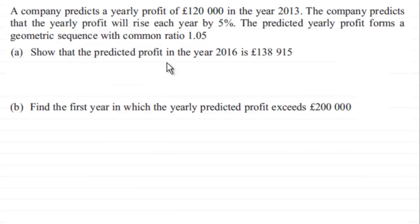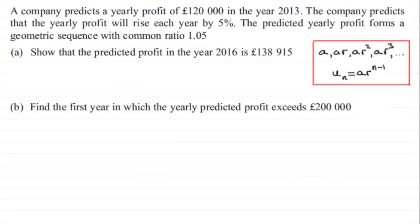In part A we need to show that the predicted profit in the year 2016 is £138,915. To do this you need to be familiar with the geometric progression — you can check it out at ExamSolutions.net. Essentially, if the first term is a with common ratio r, the terms are a, ar, ar², ar³, and so on, giving the nth term as U_n = ar^(n−1).